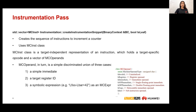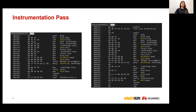Now let's discuss each part in detail. Starting with the instrumentation pass and creation of instrumentation snippets — that means the sequence of instructions to increment a counter. It uses the MCinst class, which is the target-independent representation of an instruction, holding the target-specific opcode and a vector of MC operands. Instrumentation for the x86 platform was already supported by Bolt, so let's take a quick look at how it represents it in the final binary.